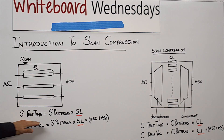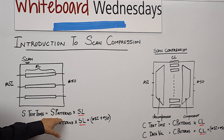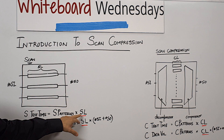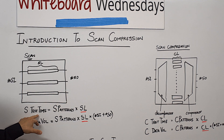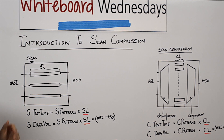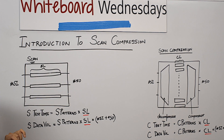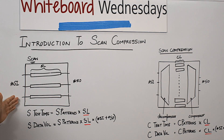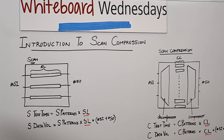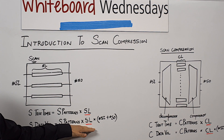So the test time is dependent on the scan chain length, and of course multiplied by the number of patterns that you have for that test set. So the longer the shift length, the more the test time. If you compute the data volume, it's a similar calculation. In this case, the stimulus and the responses that are saved on the tester are also represented in this equation, and the data volume also increases as the chain length increases.